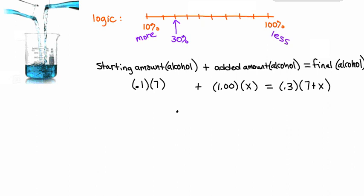So we have 0.7 plus 1x equals, distribute the 0.3 to 2.1 plus 0.3x. Subtract 0.3x from both sides. We have 0.7 plus 0.7x equals 2.1.